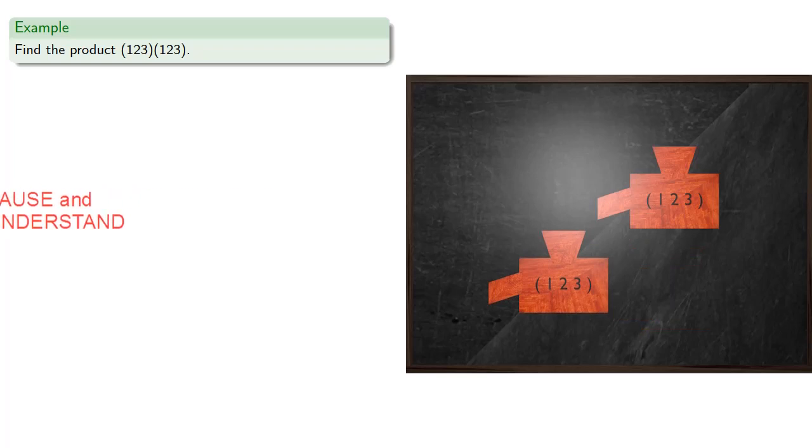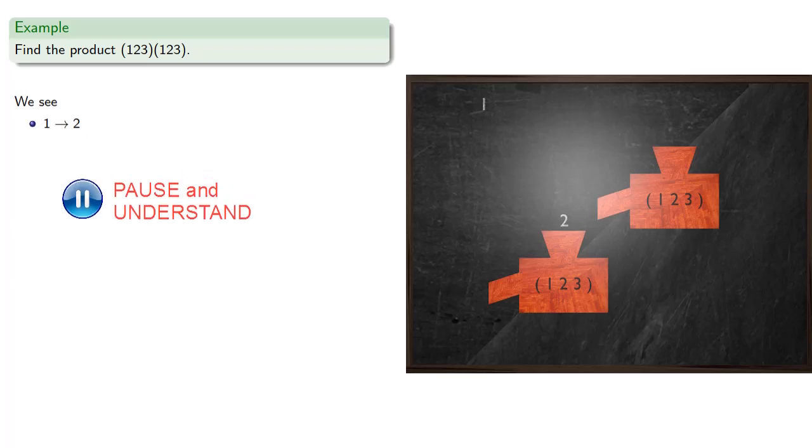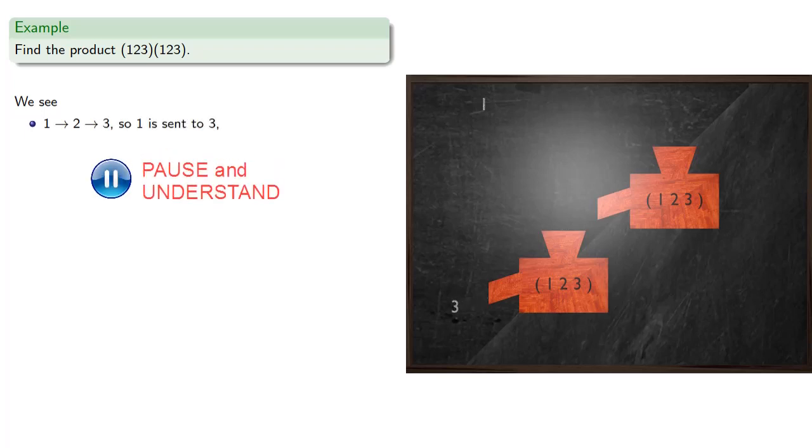So let's find the product of cycles (1,2,3) by (1,2,3). Now, because this product of cycles corresponds to a composition of functions, what we're really doing is we're applying a function, and then we're applying a function to the output. So we'll start with our element 1, and we'll drop it into the first function, which sends it to 2. Now we'll drop 2 into the second function, which sends it to 3. And so 1 is sent to 3.